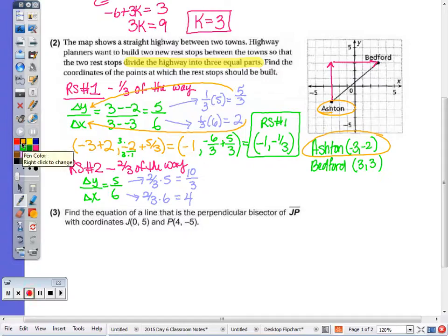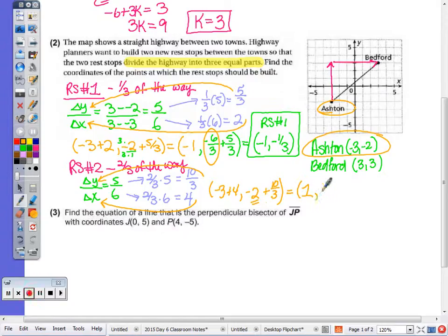Again, adding to the Ashton coordinates, I have, again, I'm going to add 4 to the x. So negative 3 plus 4, and then 2, the y value of negative 2, I'm going to add 10 thirds. Using what we said above, negative 3 plus 4 is 1, but 2 I can rewrite as negative 6 over 3 plus 10 over 3. And when I add that, we're going to get rest stop number 2 at 1, 4 thirds.